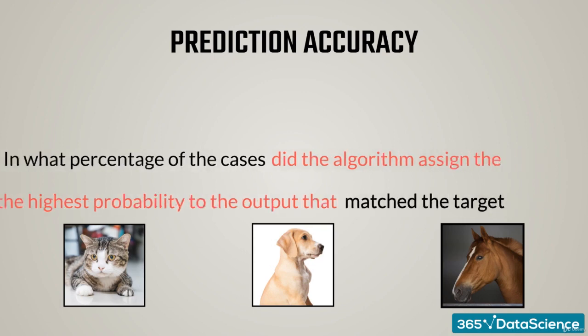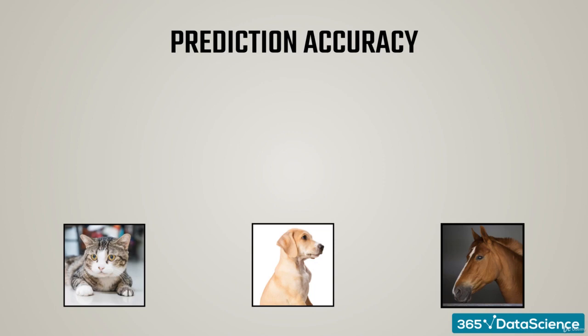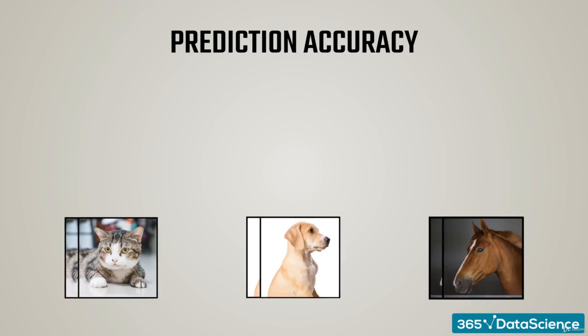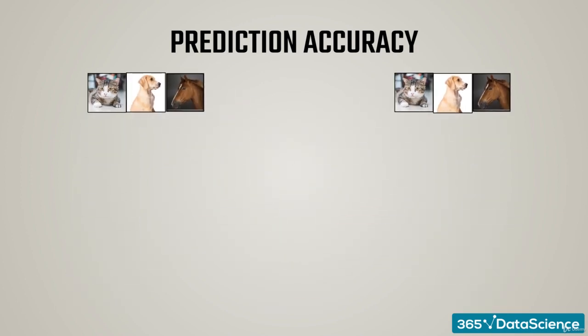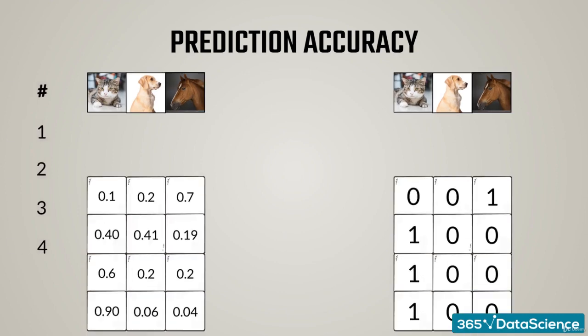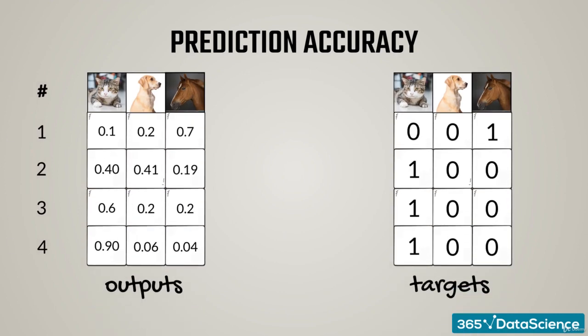How do we do this? Let's do another throwback to our cat-dog-horse example, as you know it so well. Let's say we have four samples. The left matrix represents our outputs, while the right one, the targets. The targets are one-hot encoded, thus we know that the first photo is of a horse, and the next three, of cats.